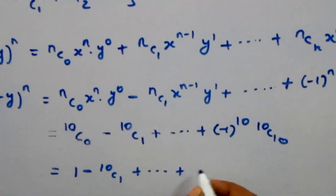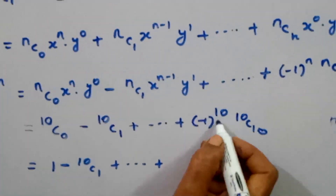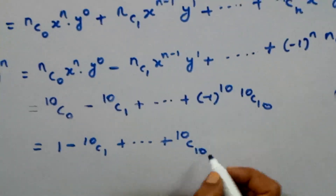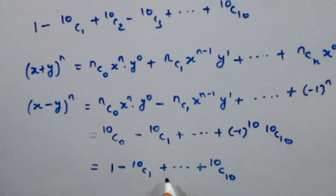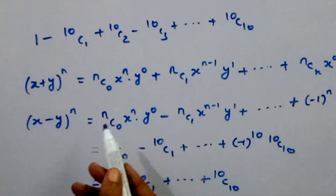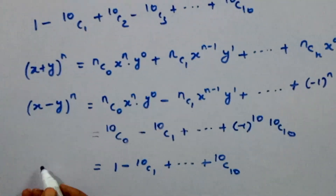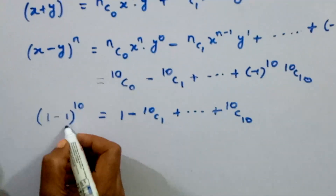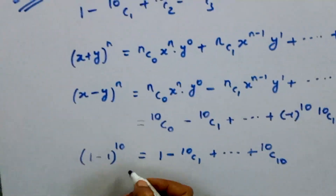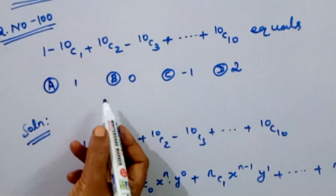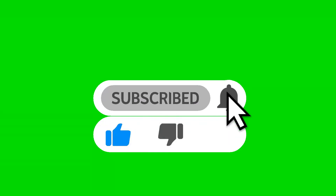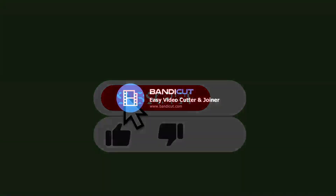Replacing 10c0 with 1 in the series: 1 minus 10c1 plus ... plus minus 1 to the power 10 times 10c10. Since n equals 10 is even, the last term is positive. Substituting x equals 1, y equals 1, and n equals 10 into the binomial expansion gives zero. So the answer is 0.